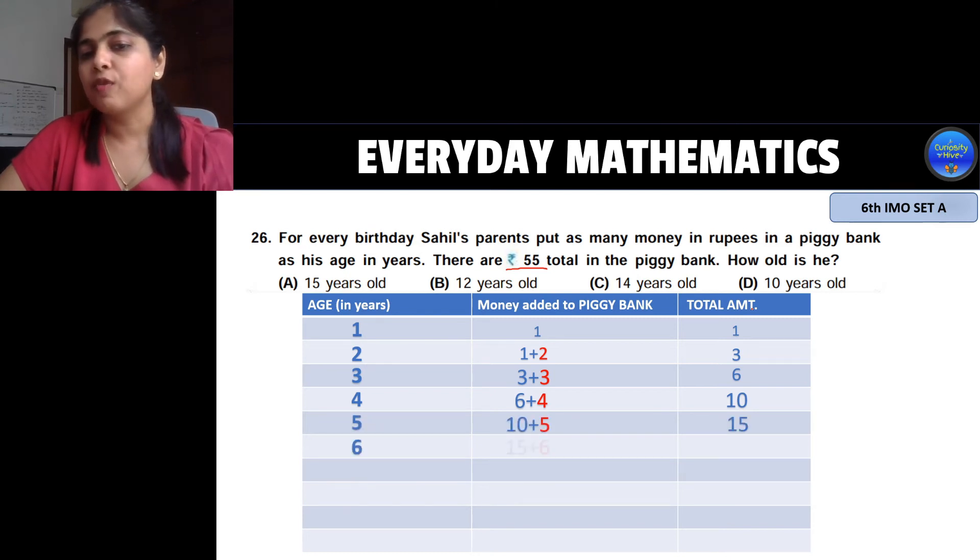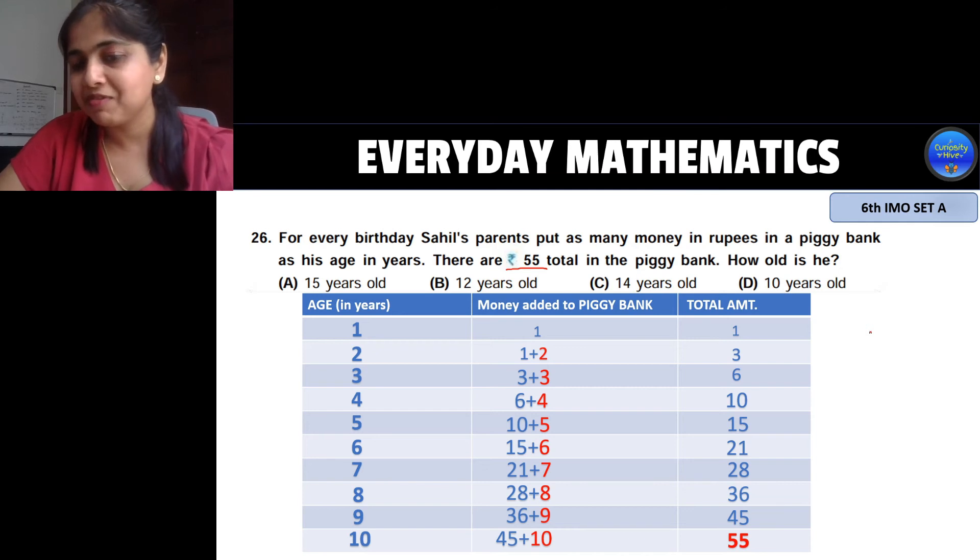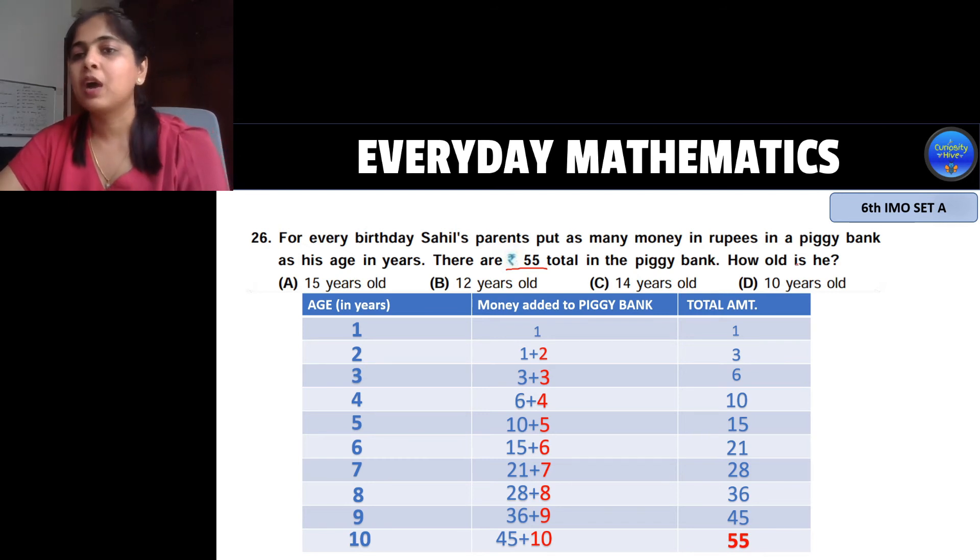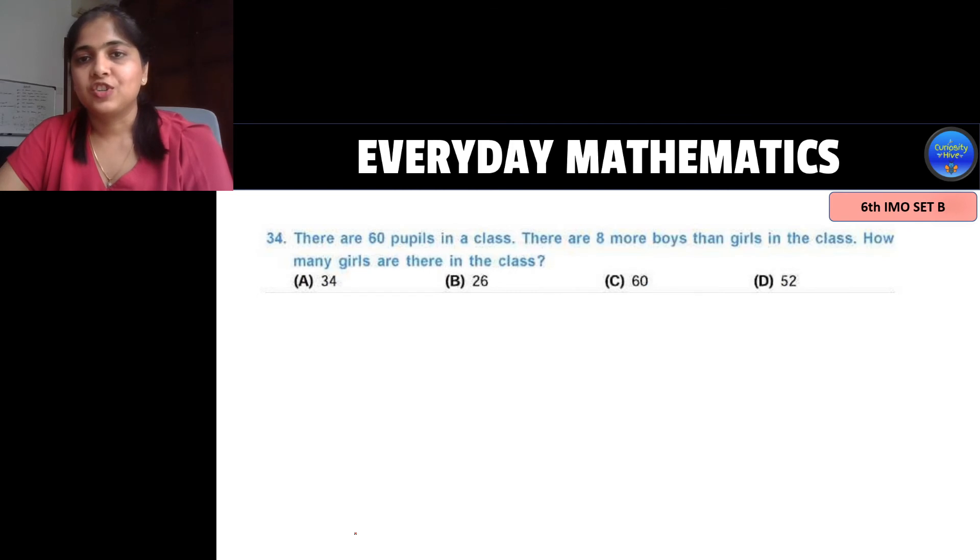So on and so forth goes on and then you finally reach when he is 9 years old the total amount is 45. So when he is 10 years old 10 rupees will be added to 45 which will make the total 55. So now you have reached to what they have asked that there are 55 total in piggy bank. So how old is he? He is 10 years old. So your answer is option B 10.